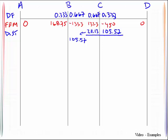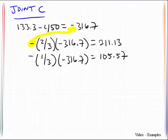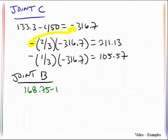I'm going to want to now handle joint B. I'm going to consider the summation of these numbers right here. So that will be 168.75 minus 133.3 plus 105.57 is equal to 141.02. I can then distribute that according to the distribution factors.